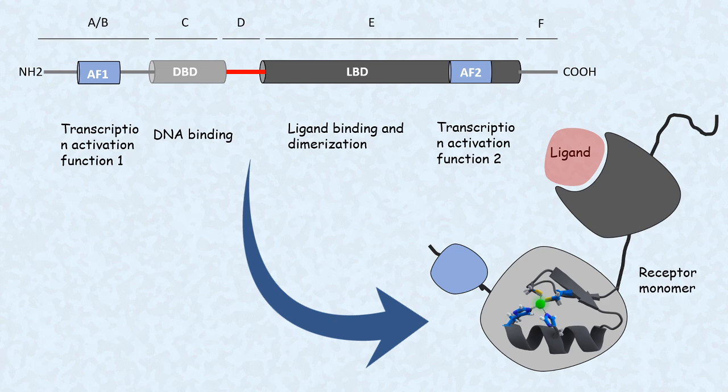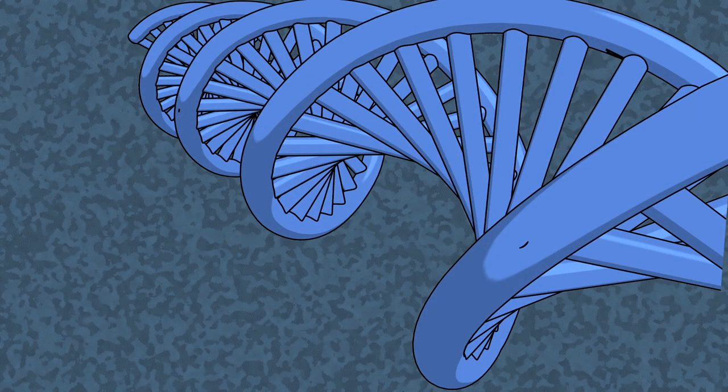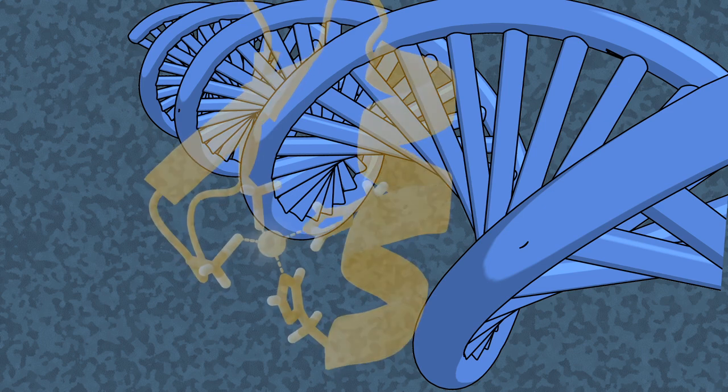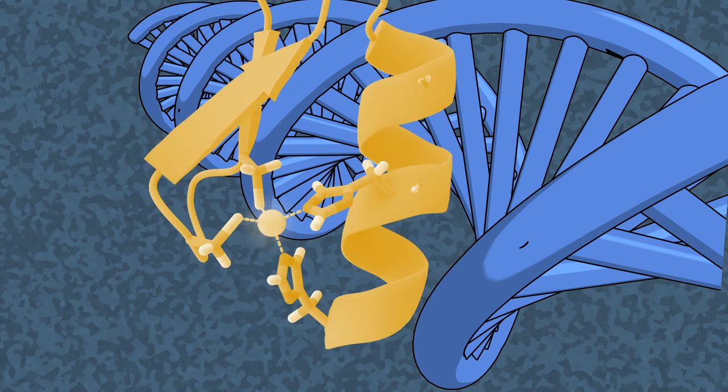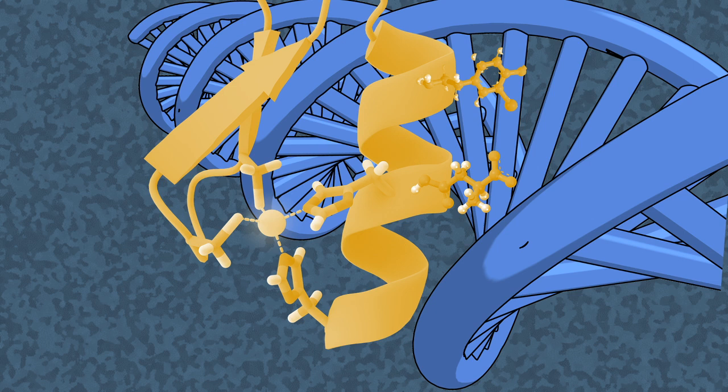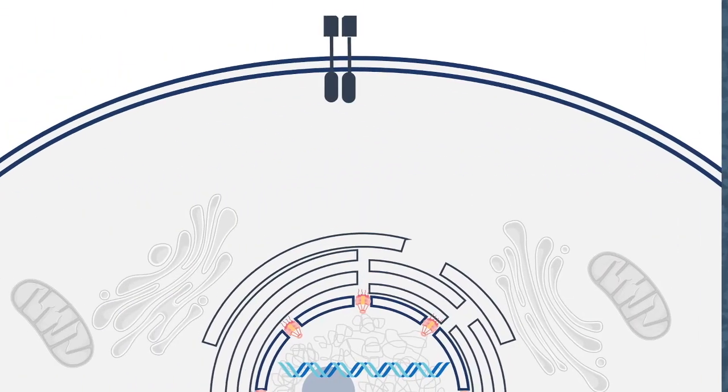Now let's look at how zinc finger motif, which is present in the DNA binding domain of this steroid hormone receptor, can bind to the DNA. In the zinc finger motif, the zinc moiety is coordinated by several residues such as cysteine or histidine, but there are amino acids which are protruding out from the zinc finger motif which form hydrogen bonds with the base pairs of DNA in the major groove.